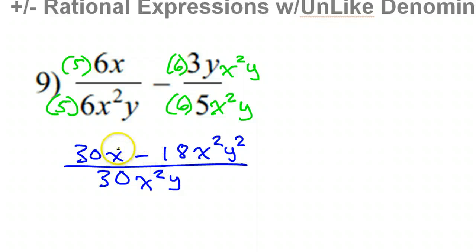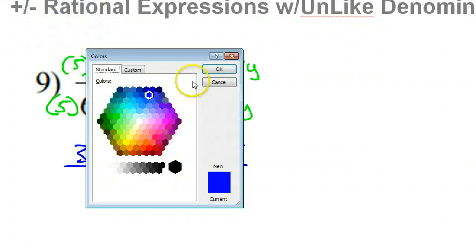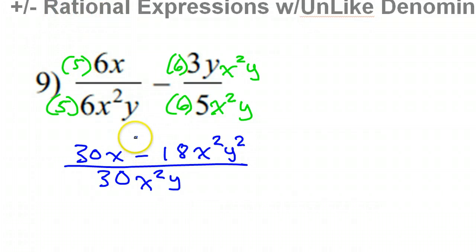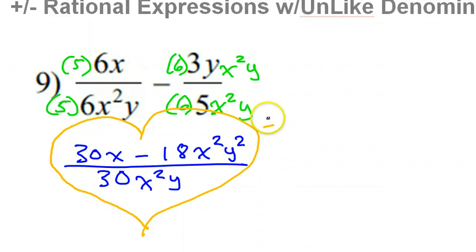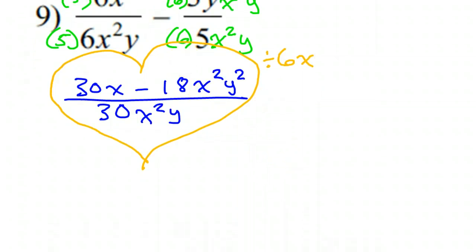When we are only talking about GCF — common factors — the easiest thing to do is ask ourselves: is there anything common to all three terms? If there is, we'll divide by that greatest common factor. They're all divisible by 3, but they're also all divisible by 6, so that's the greater factor — let's divide by 6. Also, they all have x in common. So let's divide everything by 6x.